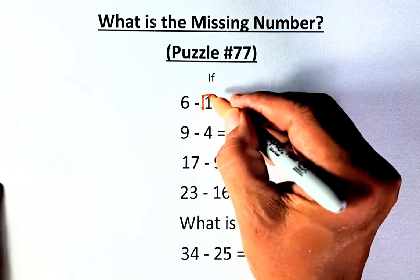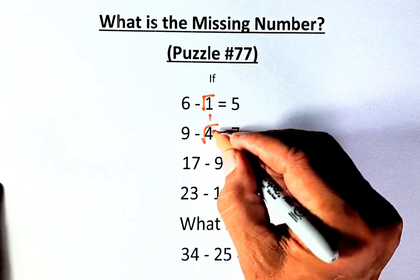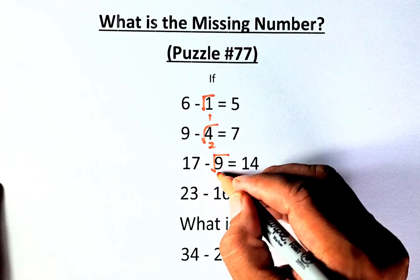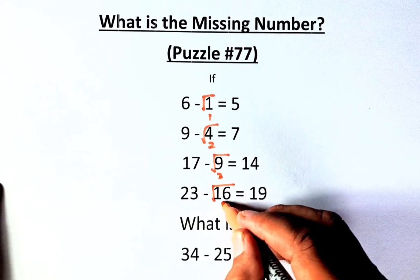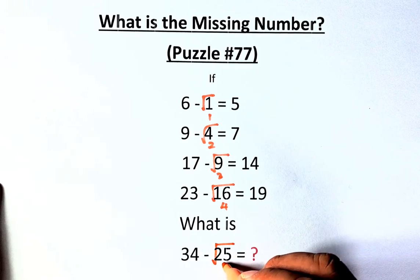So when you square root 1, it becomes 1, square root 4 becomes 2, square root 9 becomes 3, square root 16 becomes 4, and square root 25 becomes 5.